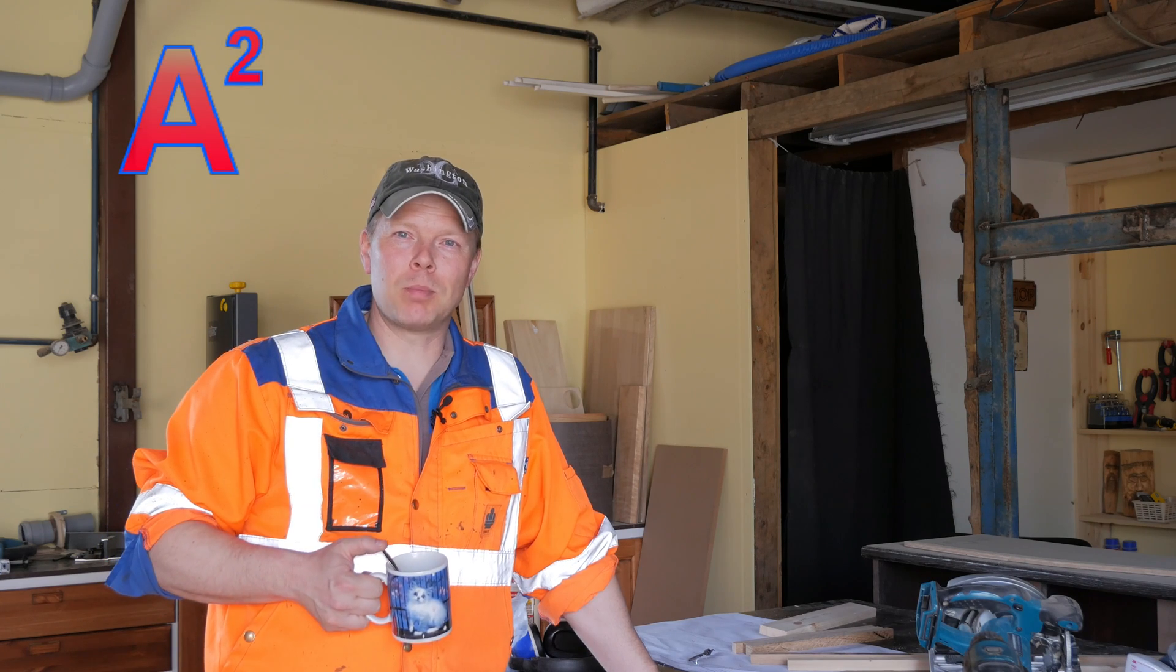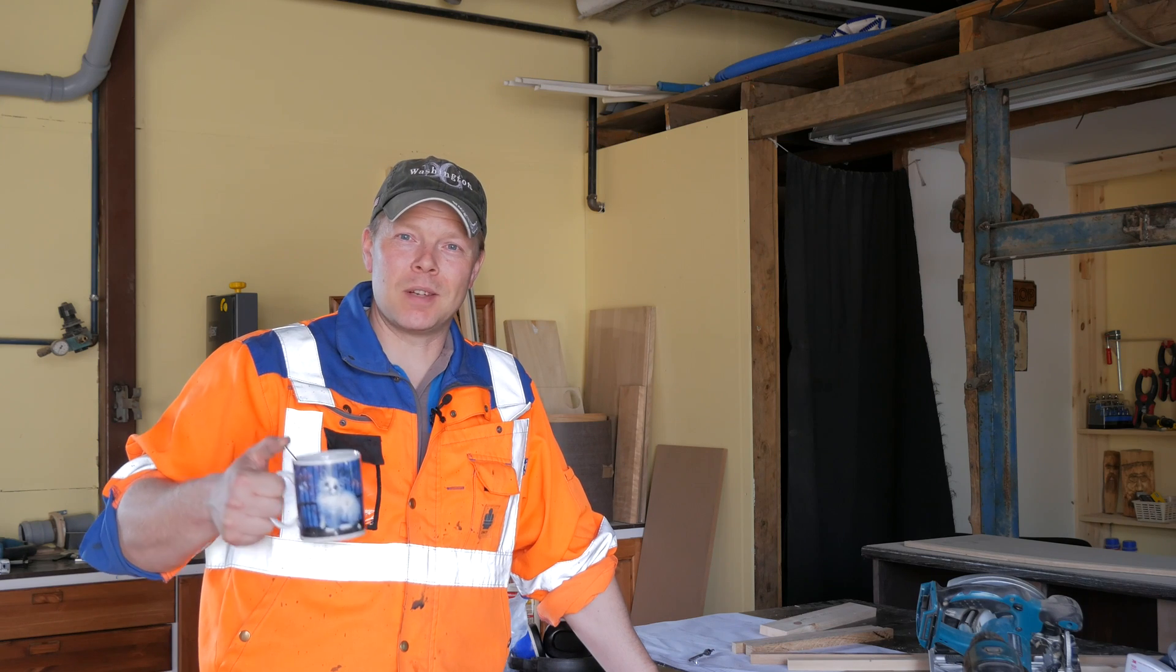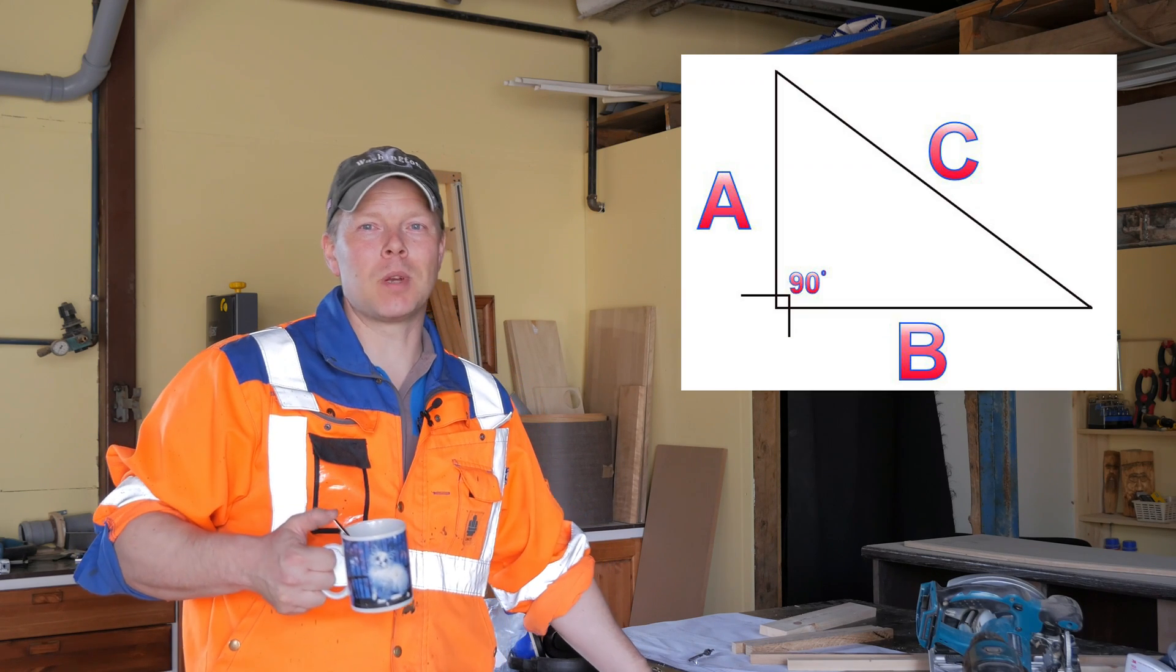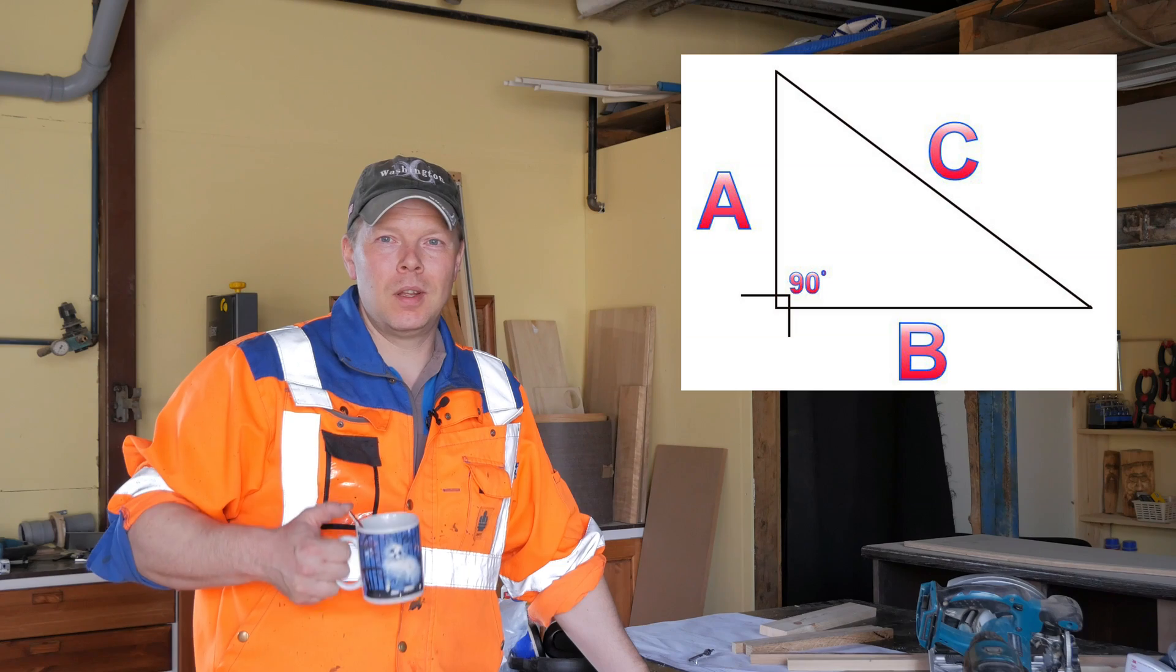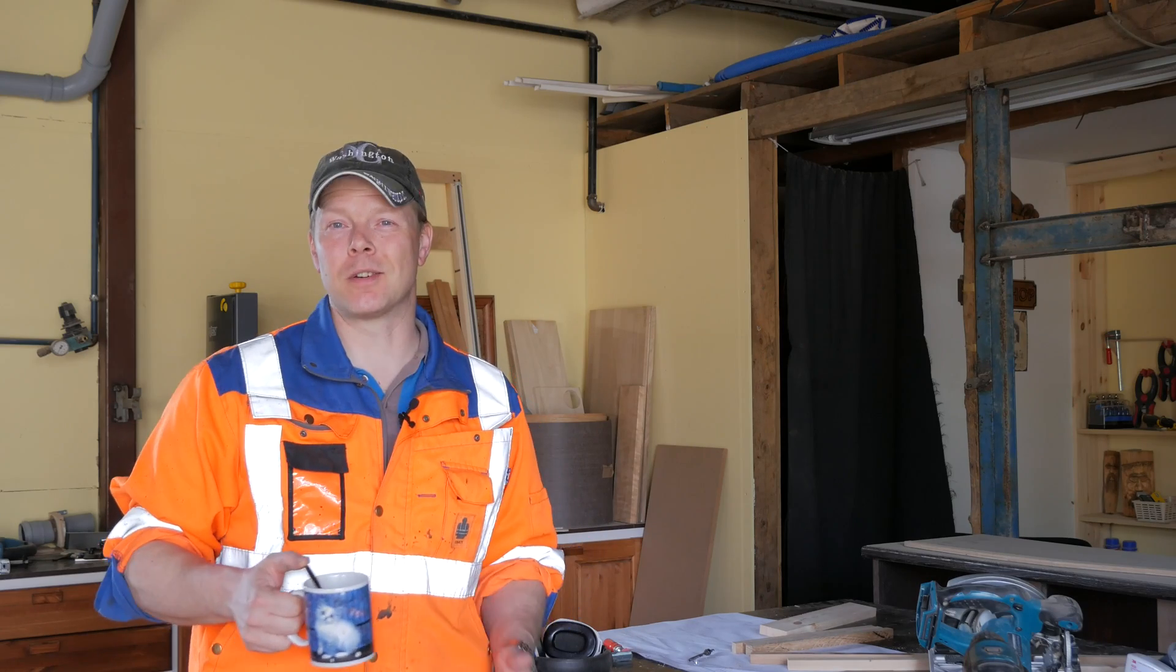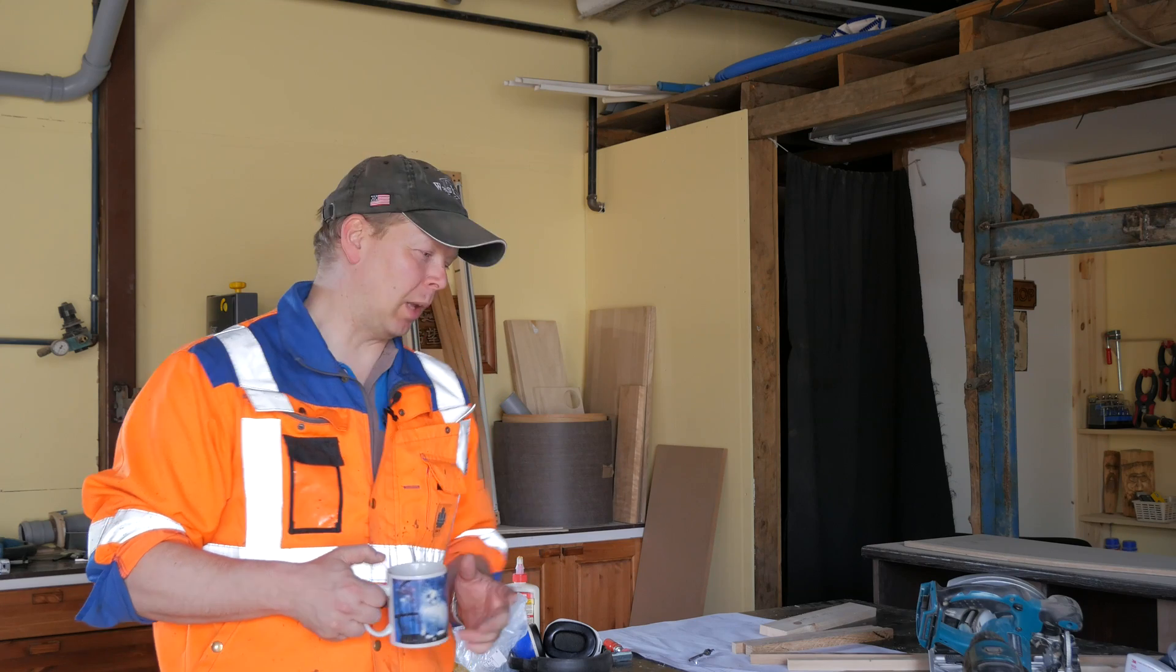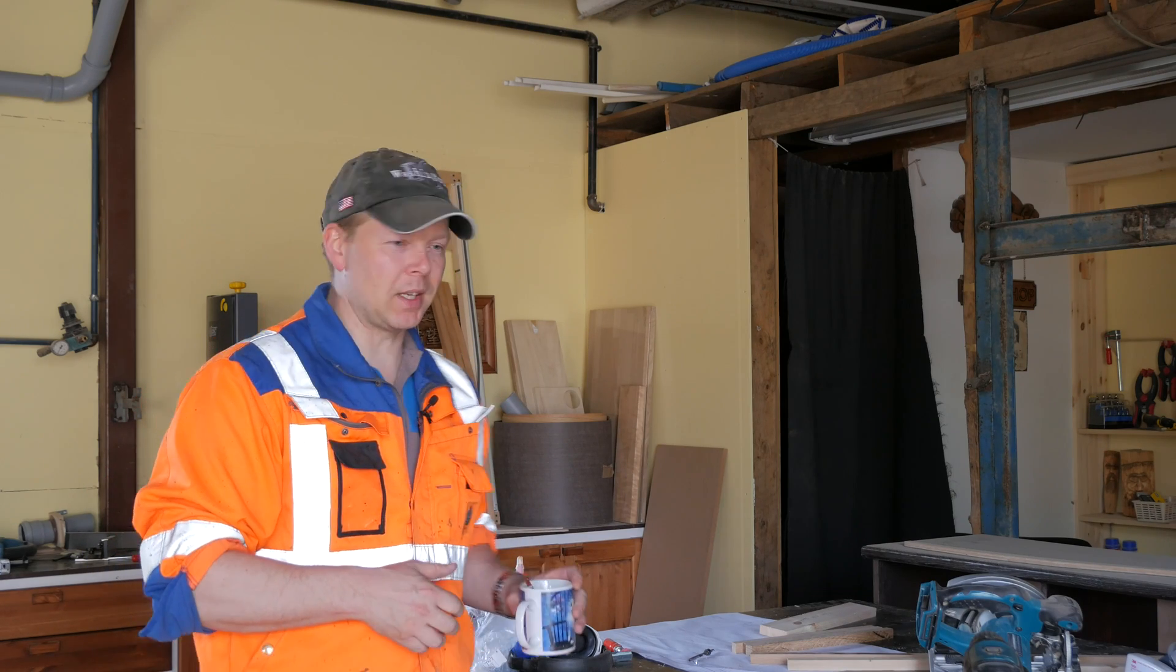Well it's A squared plus B squared equals C squared. How can you use that? Well if you want to make perfect right angles, let's say you build a box and you want to make sure that all the angles are 90 degrees, this equation helps you to achieve that.